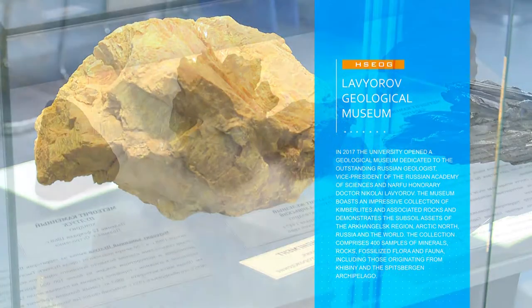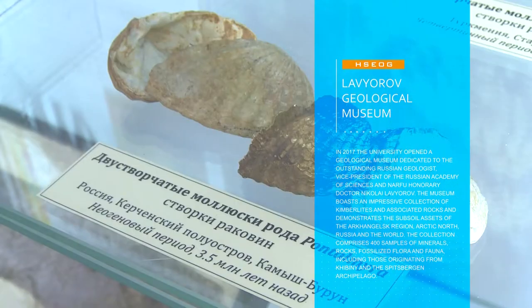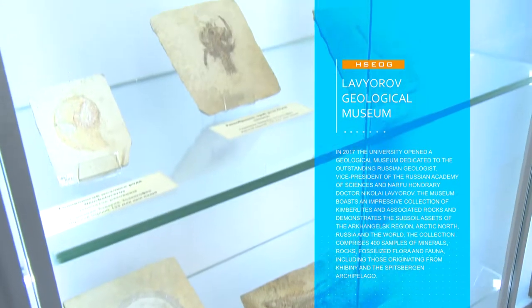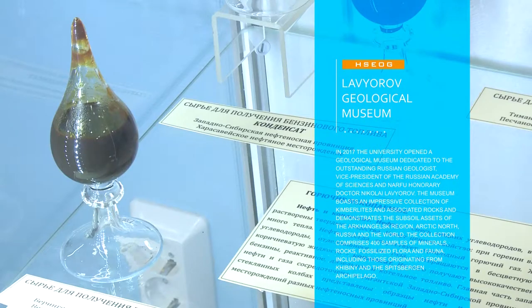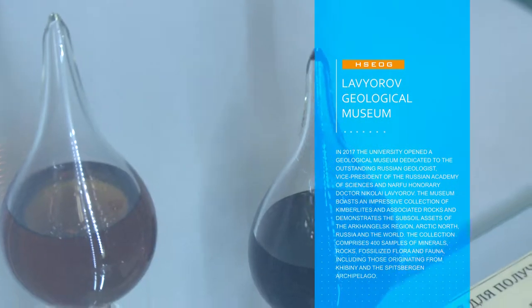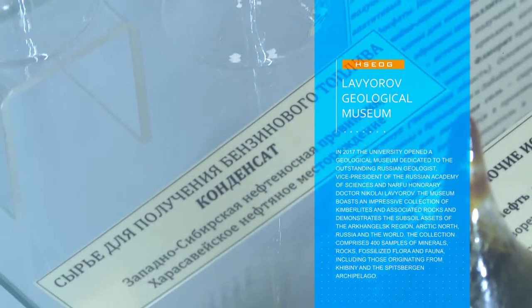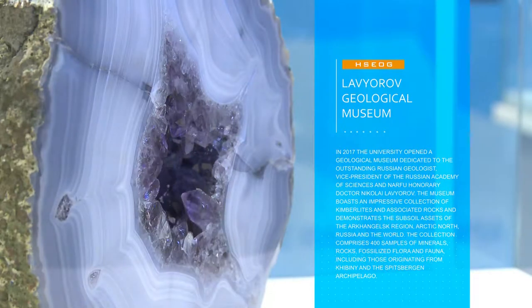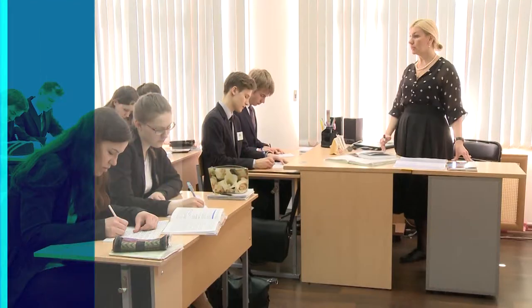The collection comprises 400 samples of minerals, rocks, fossilized flora and fauna, including those originating from Hibini and the Spitsbergen archipelago. The exhibition also displays oil from the oil fields of the Akangosk region. The museum is a popular venue for classes in geology, mineral science, petrography and other disciplines.